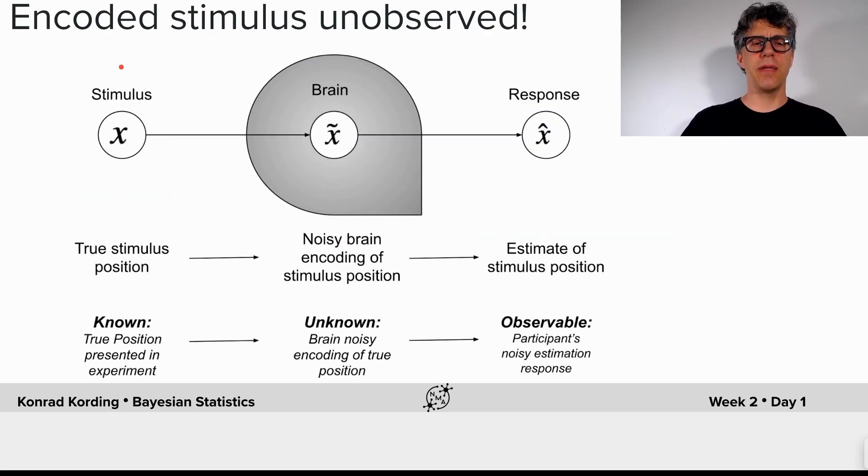So here's the difficulty. As experimentalists, we know what the stimulus is perfectly because on every trial we set it. We also know exactly what a person's response is.